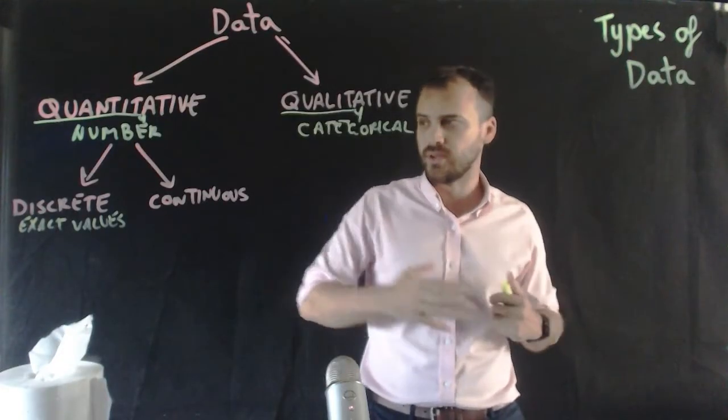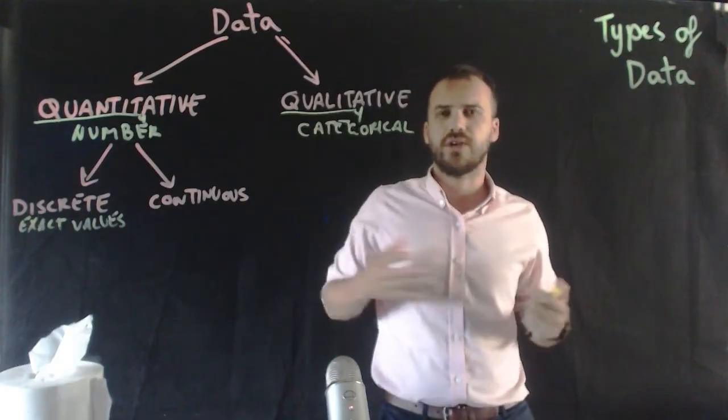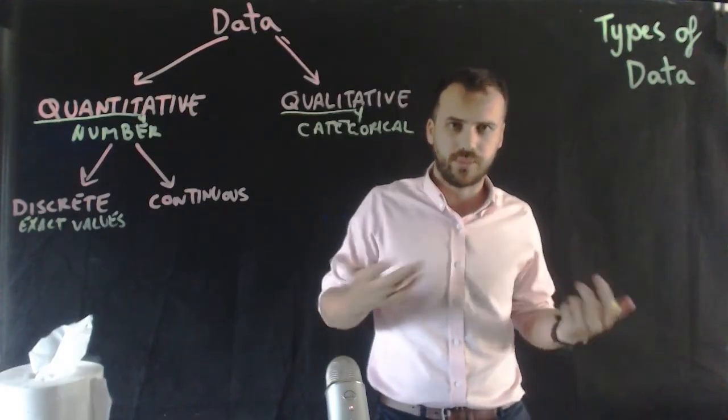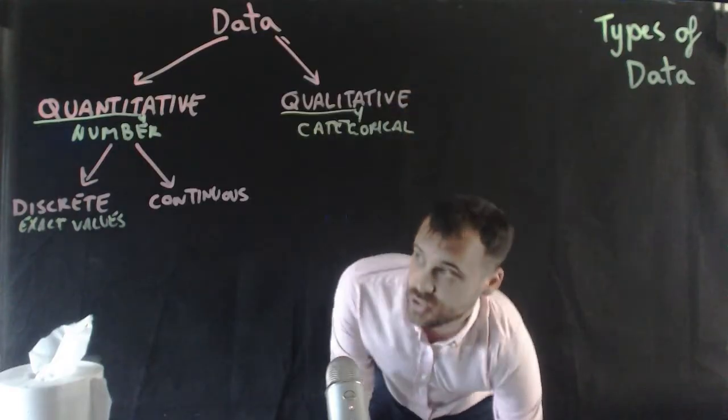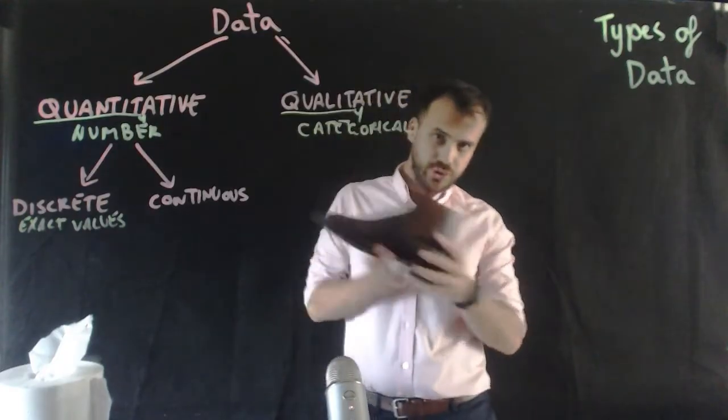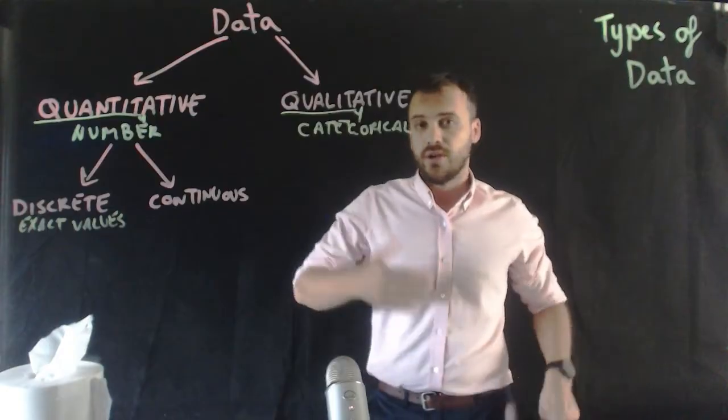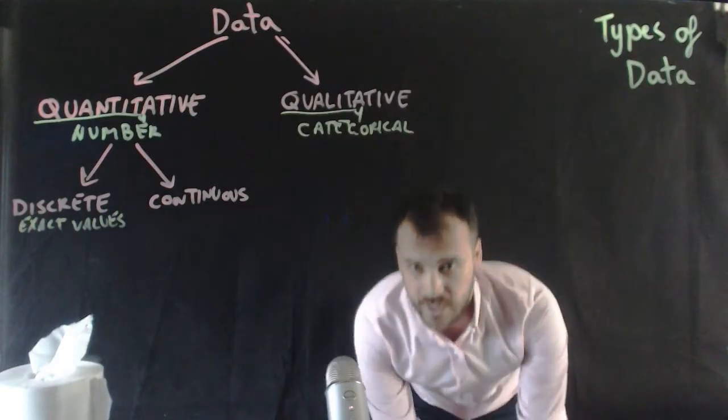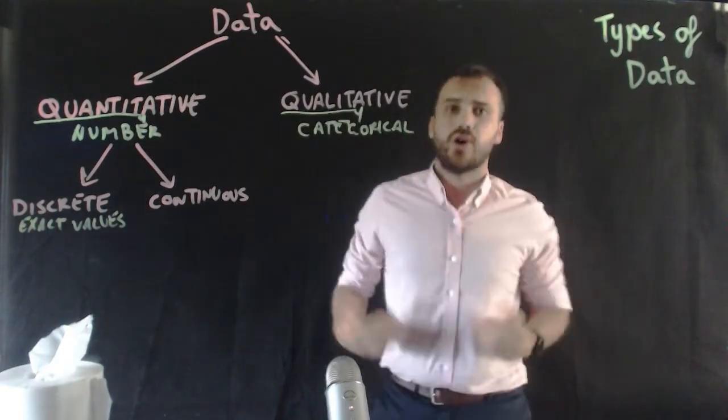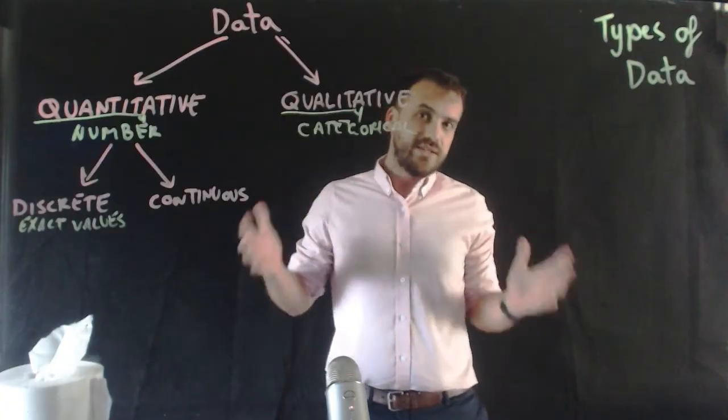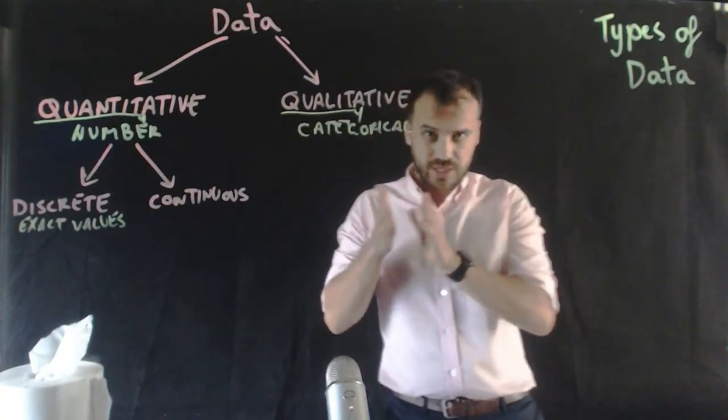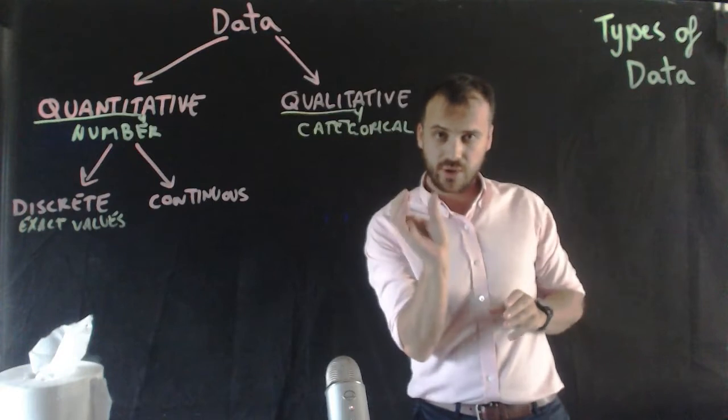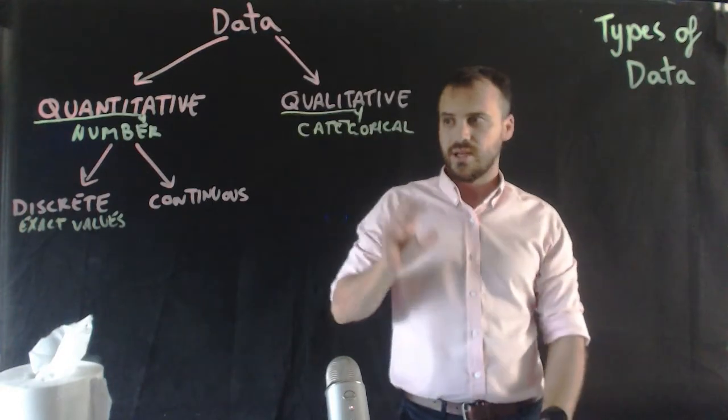11, 12. Those are discrete values. You're never in grade 1.1 or 1.2. Now another example of a discrete value, shoe size. Okay, so you're either 9 or 9.5 or 10. You're not 9.25786. These are discrete values. They can only be certain things.